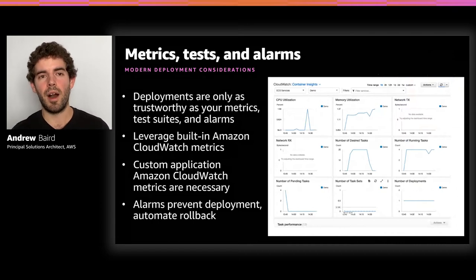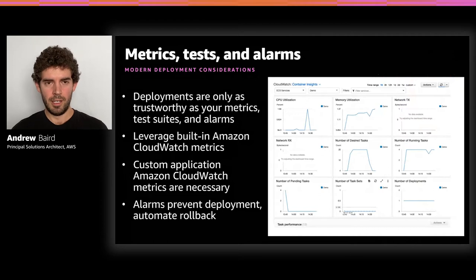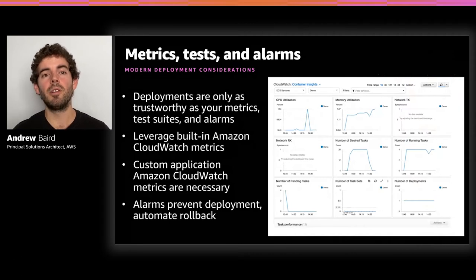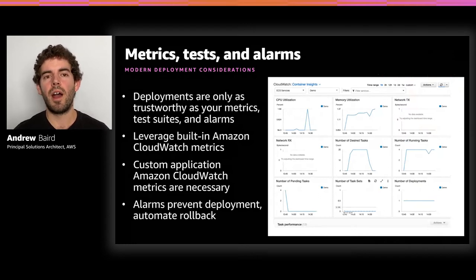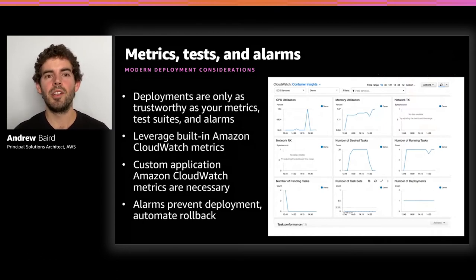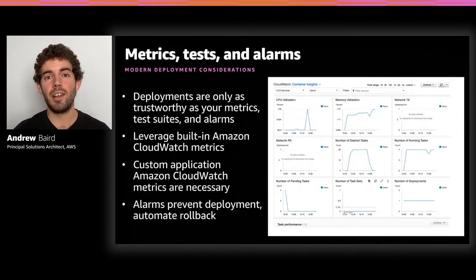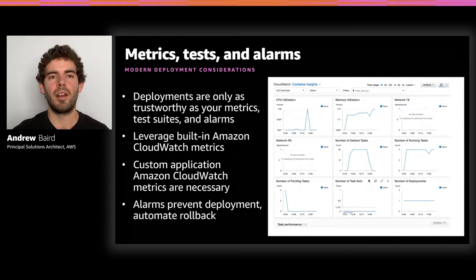AWS provides many of these things out of the box — almost all of our services have built-in metrics relevant for operations. But don't only depend on those. You know your business and application context best, and there will be metrics you need to gather from your own application. Things like how many orders are completing on your e-commerce website, how many users are visiting a specific page, how many errors are being generated by a specific line of code related to revenue — those are the types of things you should be generating metrics on, creating tests around, and creating alarms around.